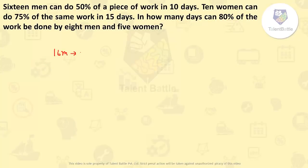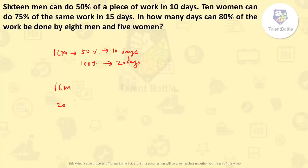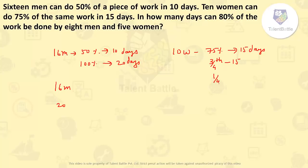16 men can do 50% of work in 10 days, so 16 men complete full work in 20 days. 10 women can do 75% of the same work in 15 days. Since 75% takes 15 days, the remaining 25% takes 5 days, so 10 women complete full work in 20 days. They are asking how many days can 80% of the work be done by 8 men and 5 women.